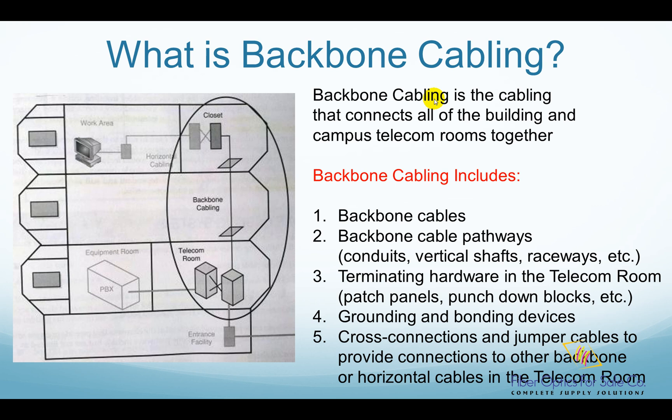A structured cabling system includes all the cabling, cable pathways, ground and bonding systems, supporting structures, and the building spaces. It is based on a concept of modular subsystems that are independent yet work together to create a complete building cabling system. Each subsystem is designed and installed independently of the other subsystems, then all of them are interconnected and work together as a single cabling system.